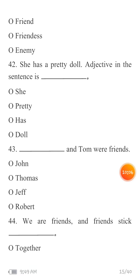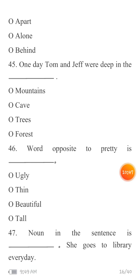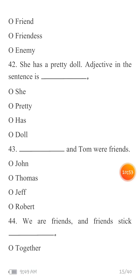MCQ 43: 'Blank and Tom were friends.' Kaun Tom ka dost tha? This is taken from unit five: 'Friends Stick Together.' Your options are: John, Thomas, Jeff, and Robert. MCQ 44: 'We are friends and friends stick blank.' What do friends do? Options are: together, apart, alone, and behind.